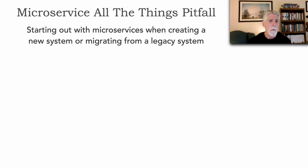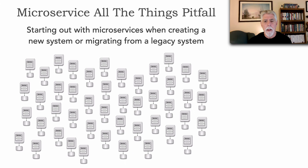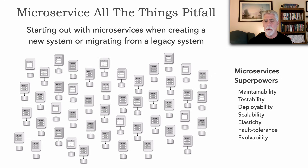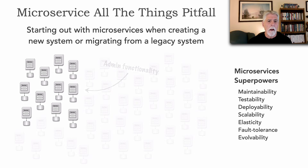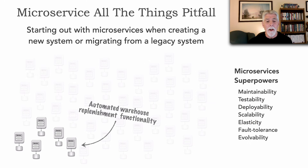Here's what happens: we start out with microservices and we end up making everything a microservice. Looking at the superpowers we reviewed — the services over here represent all of the admin functionality, maintaining things like name-value pairs and just all the administrative stuff of the system. That certainly doesn't need any of these microservices superpowers, but we gain all of the negatives. This area of the system does automated warehouse replenishment functionality, and again this doesn't need any microservices superpowers and it incurs all of the negatives.